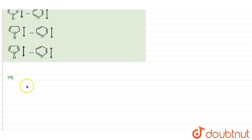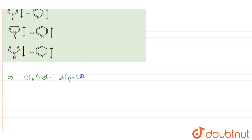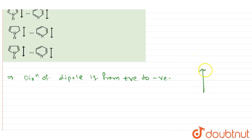Before proceeding with the pyrrole and pyridine structure, one important thing to note is that the direction of dipole is from positive to negative. So if I am drawing the dipole, this will be the positive part and this will be the negative part.